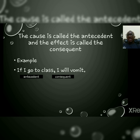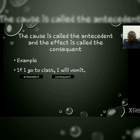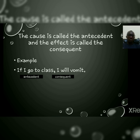The cause of any conditional statement is called the antecedent, and the effect is called the consequence. The effect aligns well with the consequence because the result or effect of anything we do is the consequence. For example, 'if I go to class, I will vomit' — 'if I go to class' is the antecedent, that is the condition. 'I will vomit' is the consequence of going to class. So for every conditional statement you come across, try to identify the antecedent and the consequence.